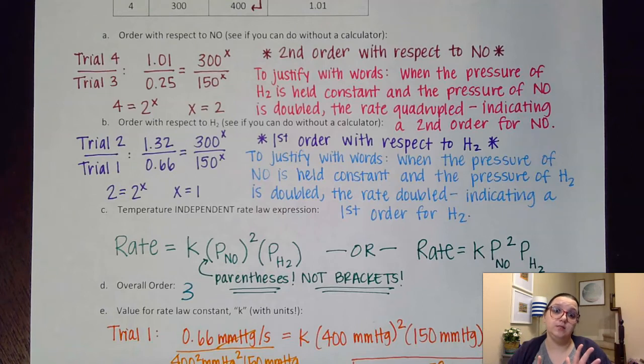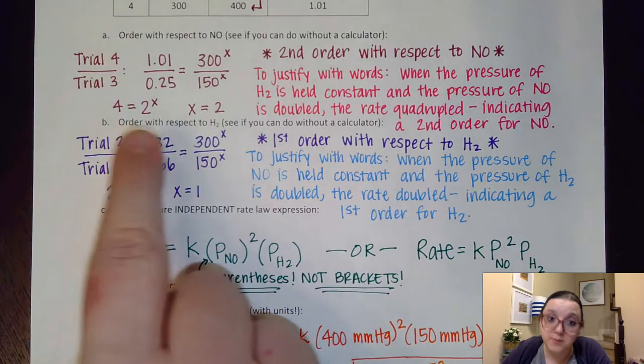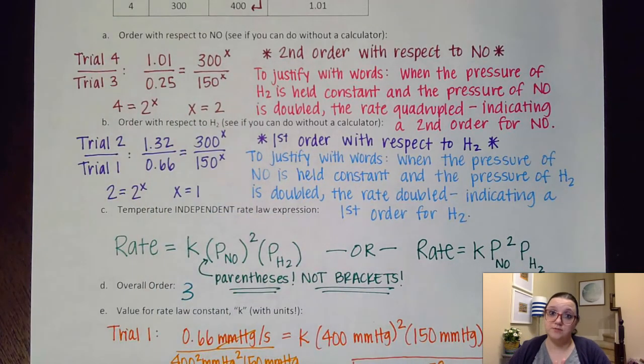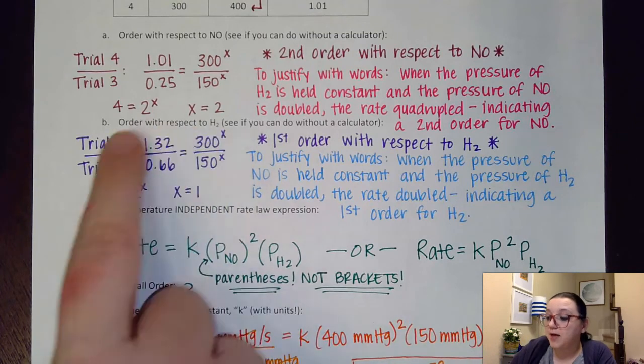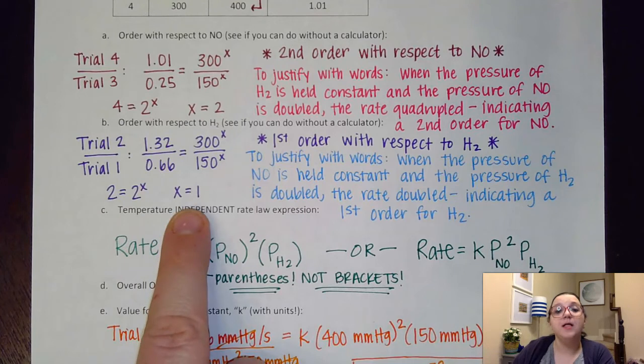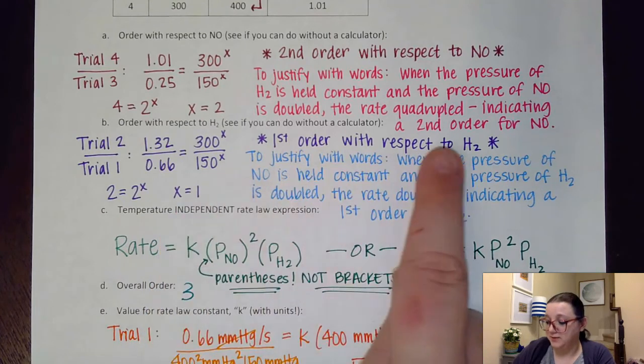So all of those things would need to be addressed if you're choosing to do this with words instead of math. I'll be honest, most people, including myself, choose to justify this with math because honestly, I think it's a little bit faster to show that math than to write all those words out. That's just me. But you are allowed to justify these with words as well.